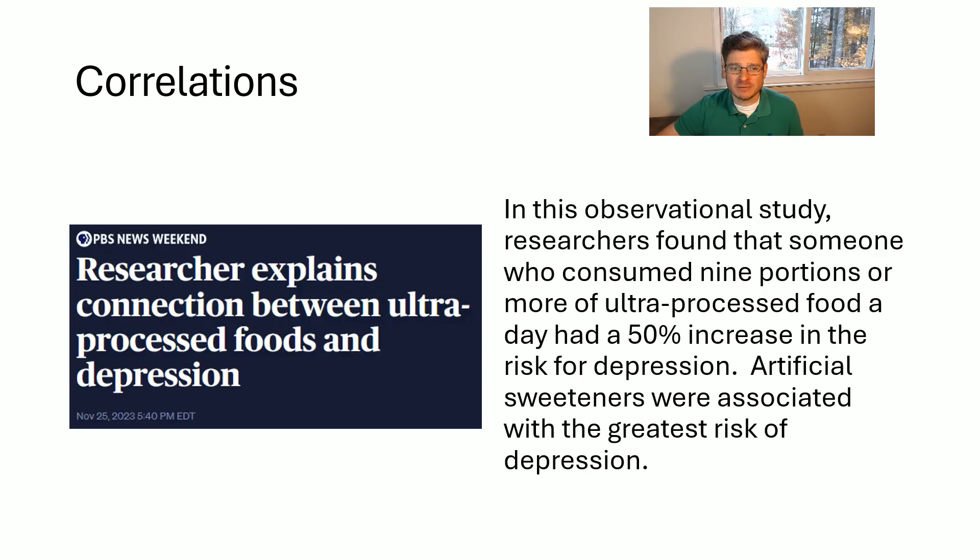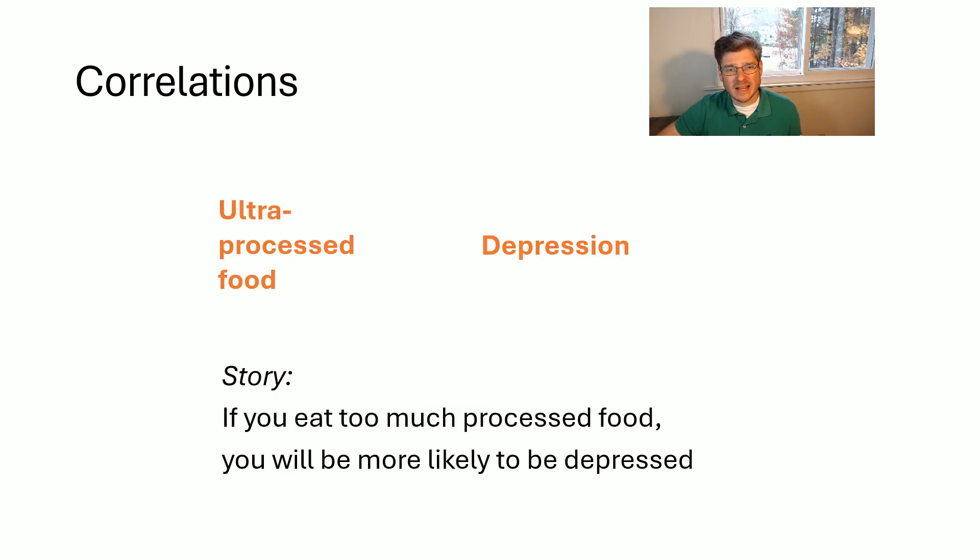So for example, this is a fairly recent study. And in this study, researchers found that someone who consumed nine portions or more of ultra processed food in a day had a 50% increase in their risk for depression. And artificial sweeteners were associated with the greatest risk of depression. Now, when we hear that there was a study that linked these two variables that linked consuming ultra processed food and depression, we are pre-programmed to all of a sudden start making stories in our head. So for example, maybe you heard that and your story said, well, oh, wait a minute. If I eat too much processed food, I'm going to increase my likelihood for being depressed. So if you eat too much processed food, you'll be depressed. Ultra processed food is the cause. Depression is the effect.